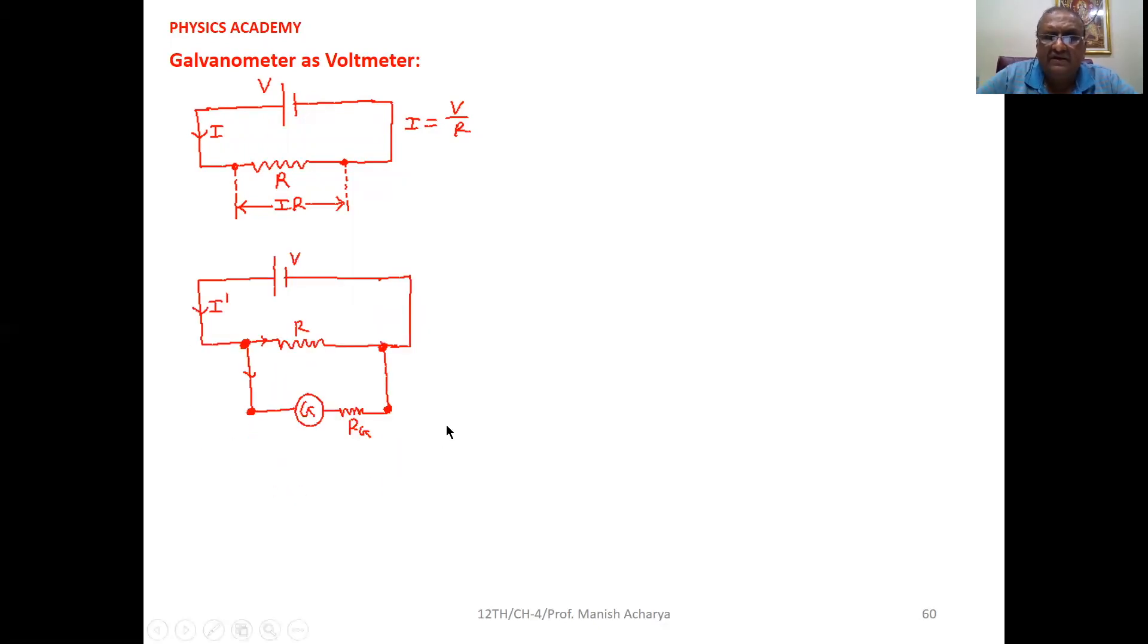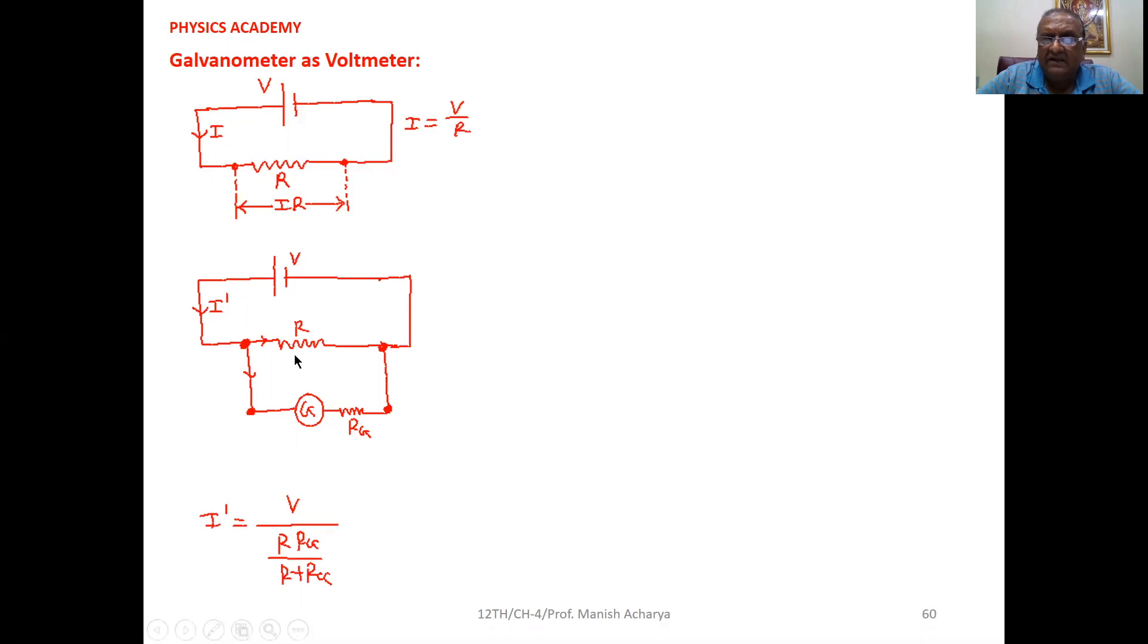Now suppose we connect the Galvanometer directly parallel to this resistance. First, the current itself will be changed because initially the circuit resistance was R, and now the circuit resistance is the parallel combination of R and RG. So current will be V upon RRG upon R plus RG. Now current is changed. Again, that particular current when it reaches here will be divided into two parts. If resistance R is greater than RG, then majority current will pass through the Galvanometer.